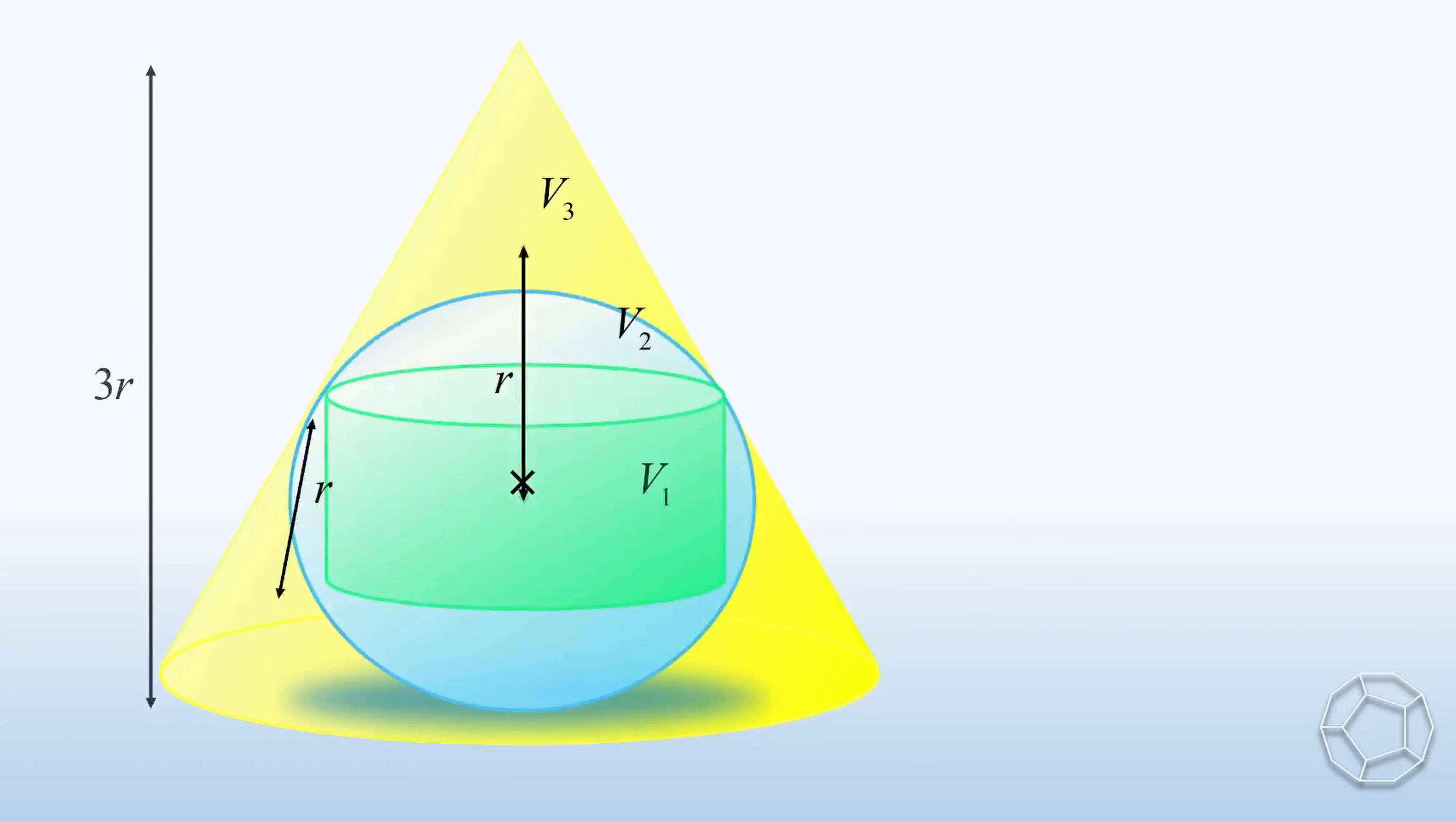Then we can combine the three results together. The volume ratio is equal to 3 over 4 pi r cubed, to 4 over 3 pi r cubed, to 3 pi r cubed. We can cancel out pi r cubed for all the three terms.